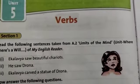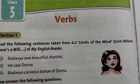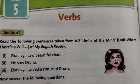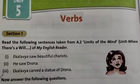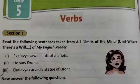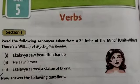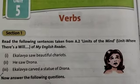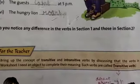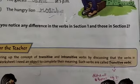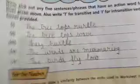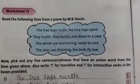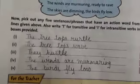Verbs are called action words because we express our actions through them. In this module, we have read about two types of verbs: transitive and intransitive verbs. And yesterday, I explained worksheets 4 and 5.